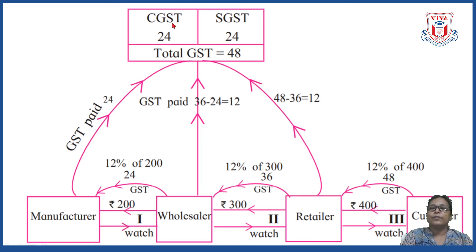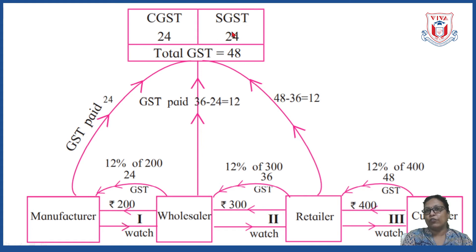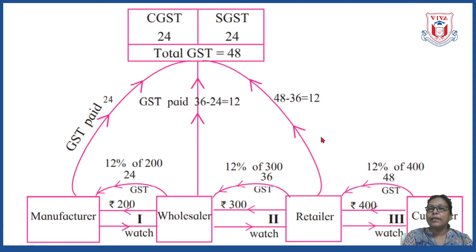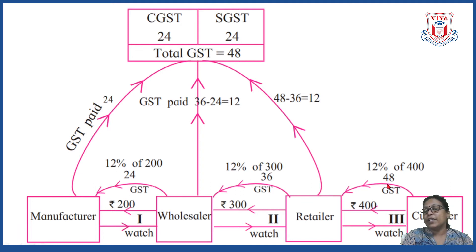This total GST of rupees 48 is divided as CGST and SGST — 24 and 24, exactly half each. Importantly, these rupees 48 are paid by the customer only. Even though GST is paid at each stage by manufacturer, wholesaler, and retailer, the GST is ultimately taken from the customer only.